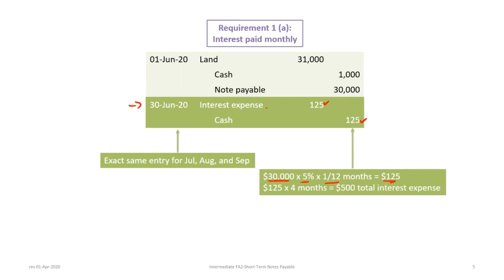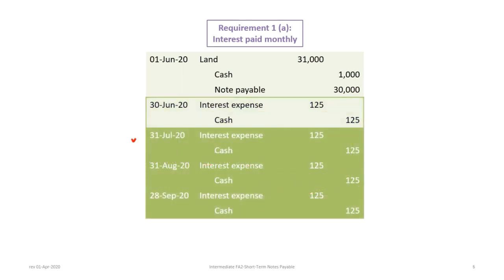We will have four months of interest, so we'll eventually need a total interest expense of $500, but we record these one at a time. The same entry occurs for July, August, and September — all debiting interest expense and crediting cash for $125 each month.